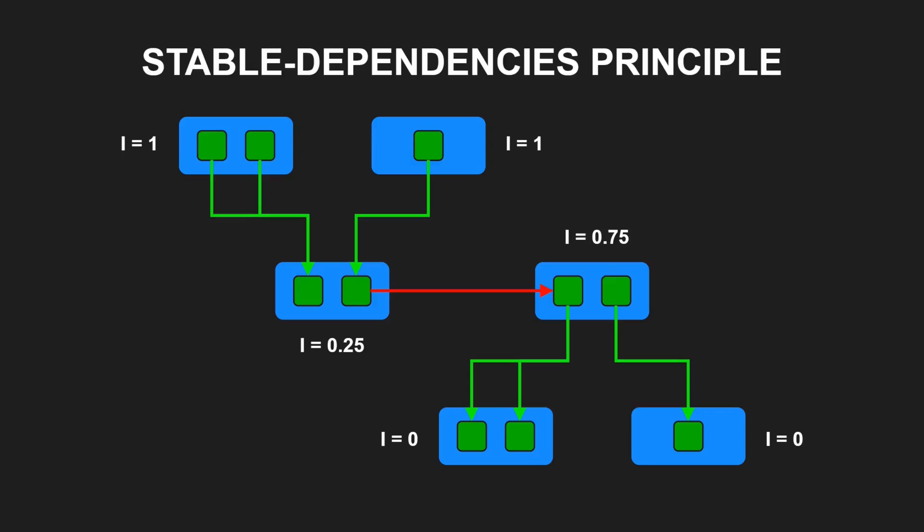Meaning, the I metric of a component should be larger than the I metrics of the components that it depends on. But how do we avoid that stable components depend on components that are supposed to be flexible? We simply apply the dependency inversion principle again and either invert the dependency directly or we extract an interface into a separate component.